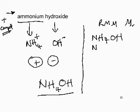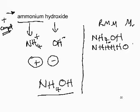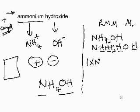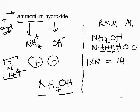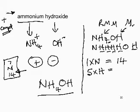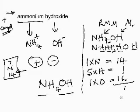In this formula we have one nitrogen, four hydrogens from NH₄, plus one oxygen and one hydrogen from OH — giving five hydrogens in total, one nitrogen, and one oxygen. Nitrogen's atomic mass is 14, so 1 × 14 = 14. Five hydrogens each contributing 1 = 5. One oxygen with atomic mass 16 = 16. Total relative molecular mass: 31.